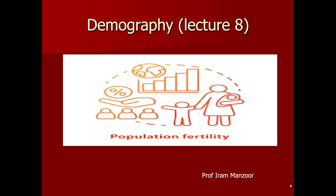You can expect almost 10 to 12 MCQs from demography in your final exams. Moving forward with fertility rates: we have discussed in our last lecture the fertility rates which comprised of the crude birth rate, general fertility rate, total fertility rate, general marital fertility rate, total marital fertility rate, and age-specific fertility rate.